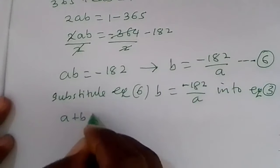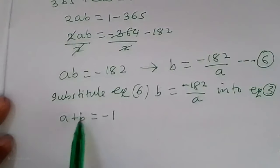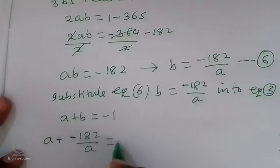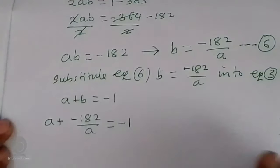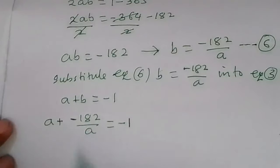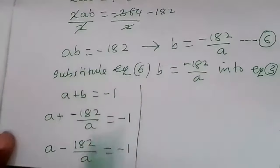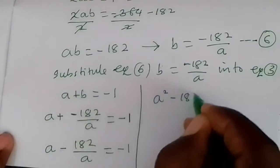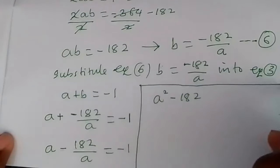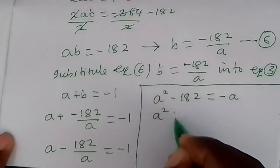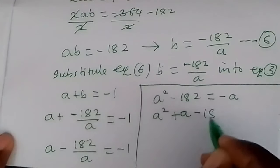Equation 3 is a plus p equals negative 1. Substituting p equals negative 182 over a, we have a plus negative 182 over a equals negative 1. Multiplying both sides by a to eliminate fractions gives a squared minus 182 equals negative a. Rearranging in standard form: a squared plus a minus 182 equals zero.